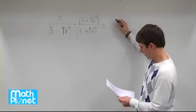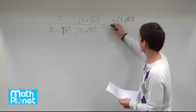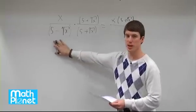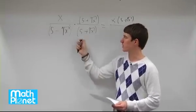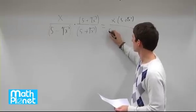So now we have x times 5 plus root x. Great. And when we multiply a conjugate, the reason we do that is because things are going to disappear. So we have first, so 5 times 5 is 25.